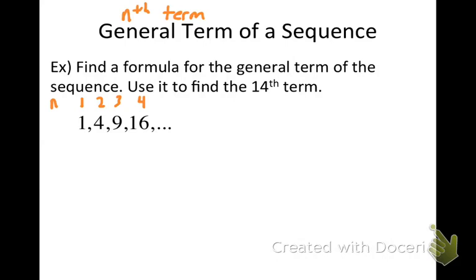Whenever we refer to the value of a term in a sequence, we write u sub n. If we're referring to the first term, we write u sub 1; if we're referring to the seventh term, we write u sub 7. When referring to the general term, we write u sub n equals n squared. So if I wanted to figure out what the 14th term is, u sub 14 equals 14 squared, which is 196.